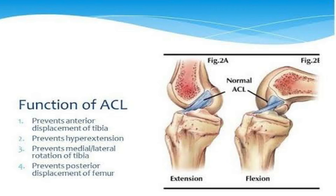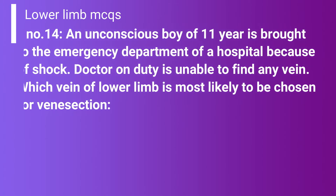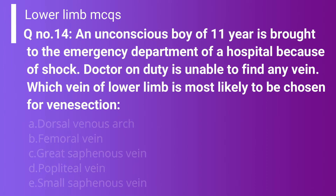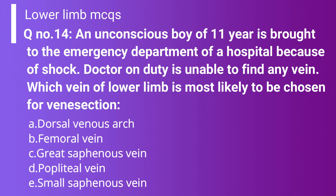Question number 14: An unconscious boy of 11 years of age is brought to the emergency department because of shock. The doctor on duty is unable to find any vein. Which vein of the lower limb is most likely to be chosen for injection? Option A: dorsal venous arch. Option B: femoral vein. Option C: great saphenous vein. Option D: popliteal vein. Option E: small saphenous vein.